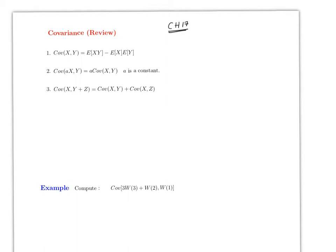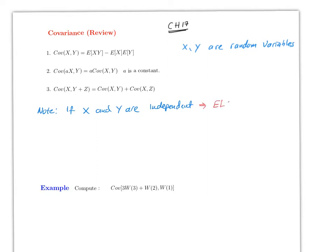First, the actual definition: if X and Y are some random variables, then the covariance between the two random variables is defined as the expected value of XY minus the expected value of X times the expected value of Y. Notice that if X and Y are independent, that means E[XY] = E[X]·E[Y], so therefore the covariance of X and Y equals zero when they are independent.